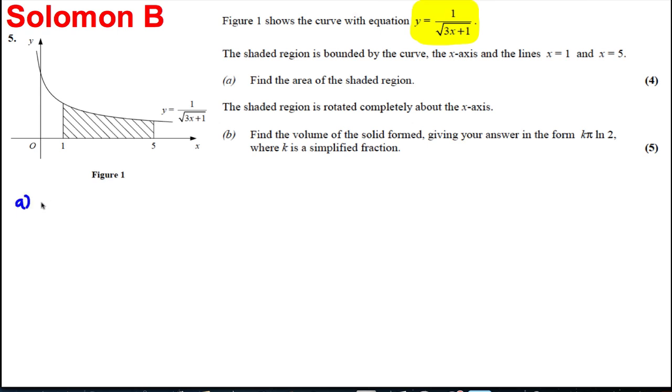For part a, nice and straightforward. The area is clearly going to be the integral when x is 1 to 5 of this function. Now this function I'm going to actually write it as 3x plus 1 to the negative 1 half with respect to x. Now it's a simple integral I can actually do.